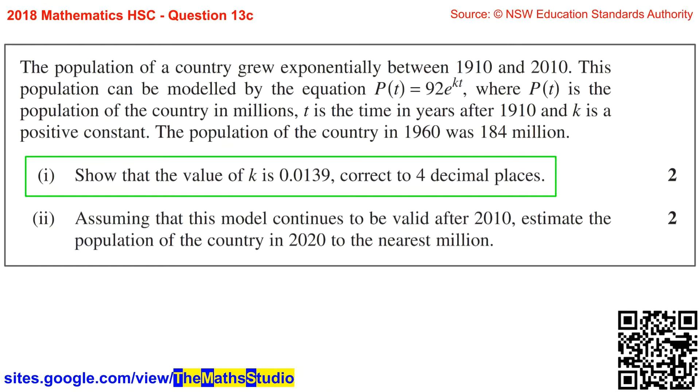Question 13c. The population of a country grew exponentially between 1910 and 2010. This population can be modeled by the equation P(t) = 92e^(kt), where P(t) is the population of the country in millions, t is the time in years after 1910, and k is a positive constant.